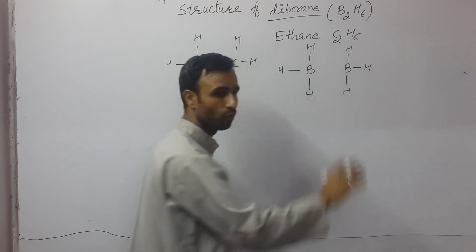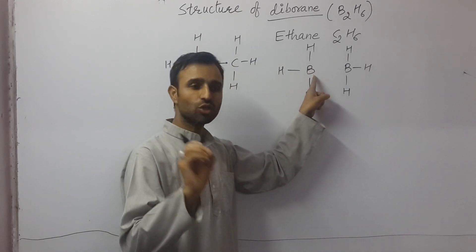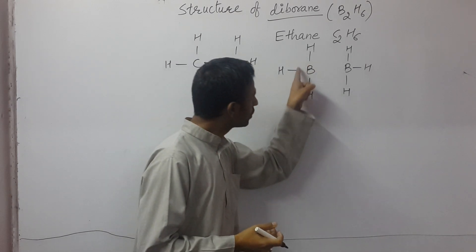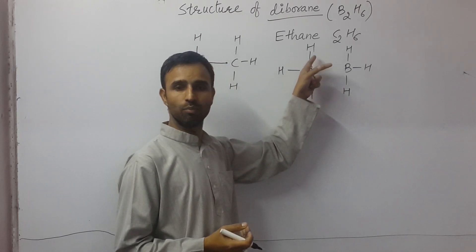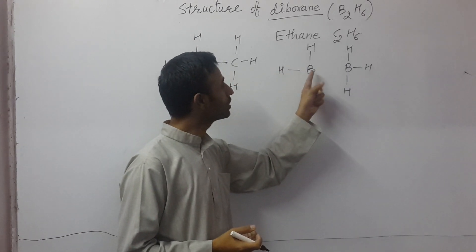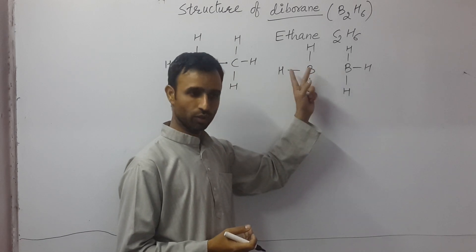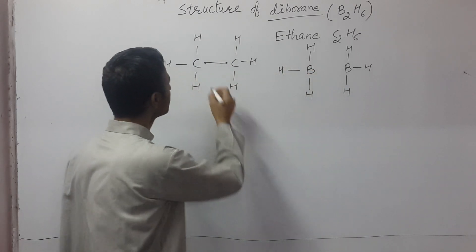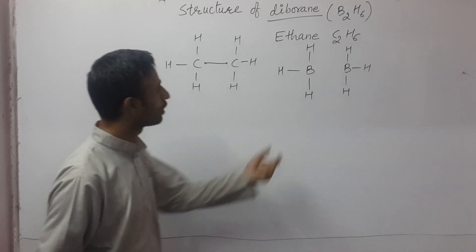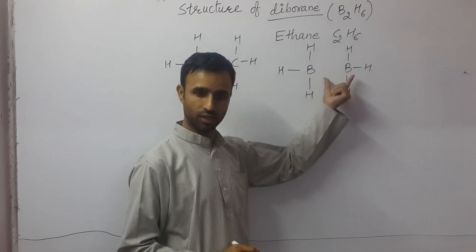But now, each boron has how many electrons? Three. Three electrons are involved in bonding with hydrogens. No electron is free or no electron is there on each boron. So this type of structure is not formed for B2H6.